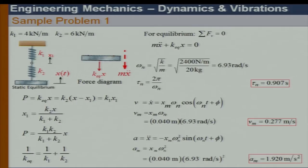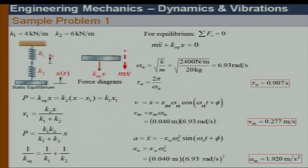For spring 2, the net compression is x minus x₁. That must equal the force in spring 1, which is K₁ times x₁. So K₂(x - x₁) = K₁·x₁.